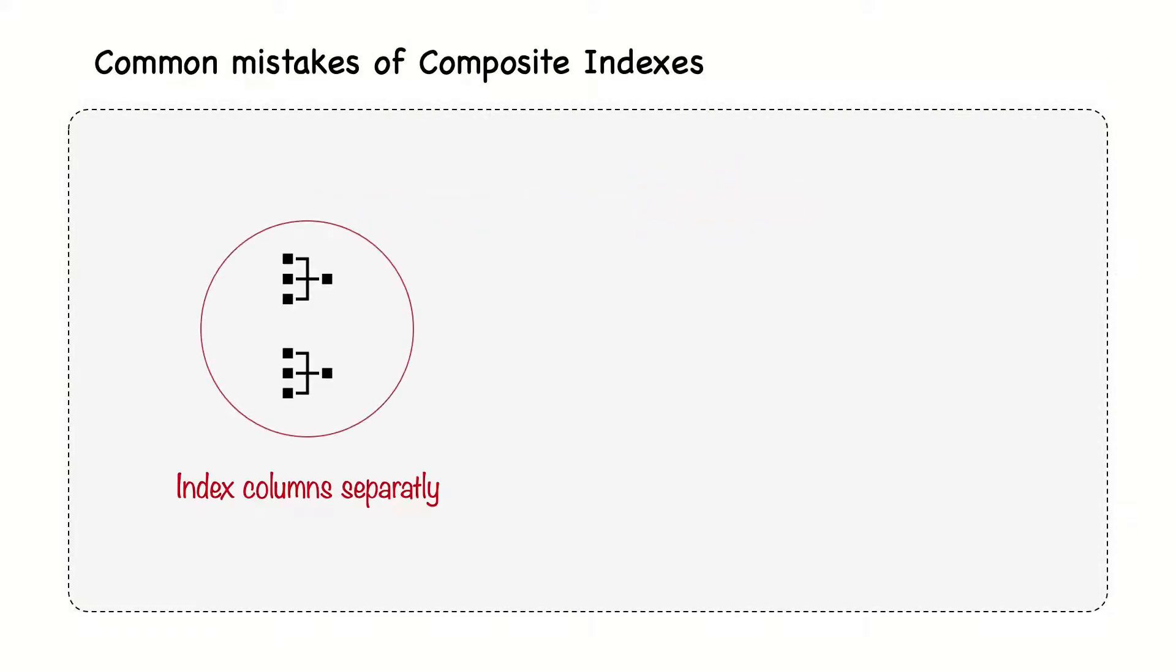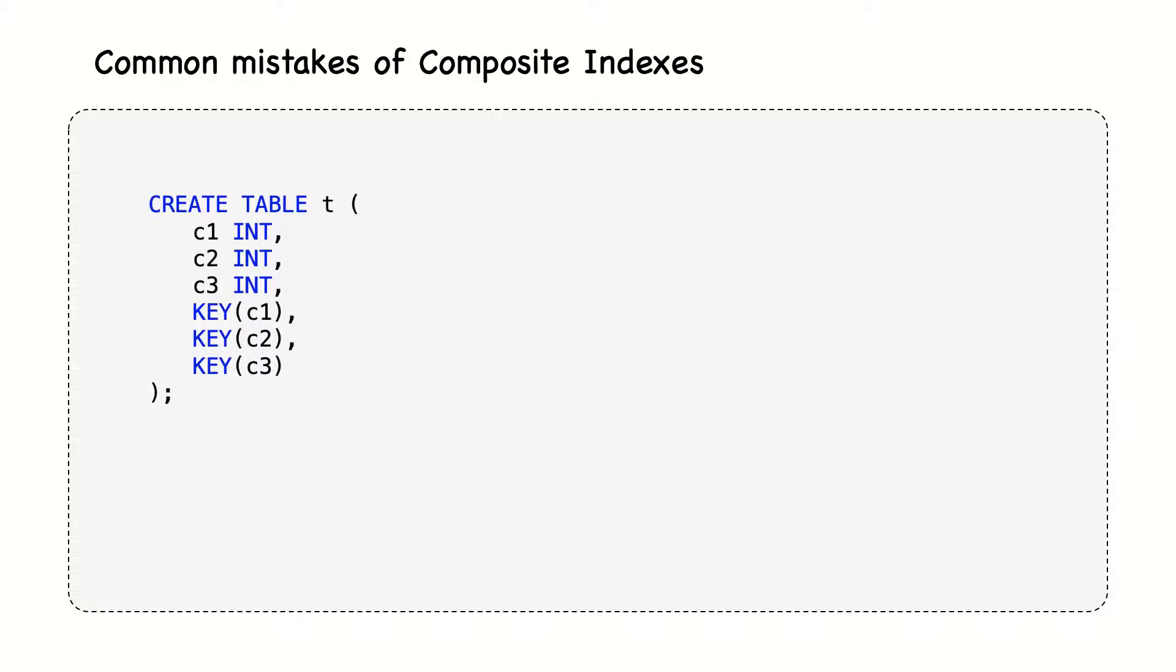Common mistakes are to index many or all the columns separately, or to index columns in the wrong order. The first common mistake has a distinctive signature, as we see here. This kind of indexes can be many orders of magnitude slower than truly optimal indexes.